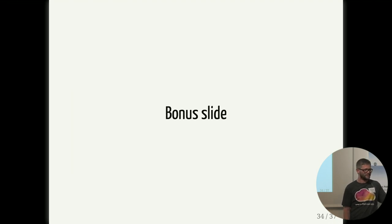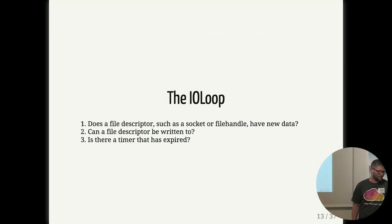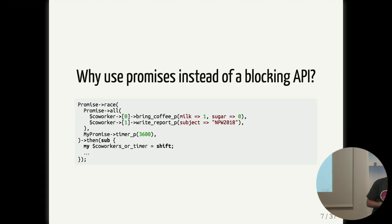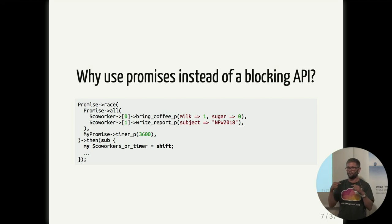Okay, now on to the bonus slides - this is going way too quick. Does anyone have any questions? [Question: Explain race and all - I've never seen promises before.] Okay, let's go back to the co-worker example. When you say Promise->all, you give it a list of promise objects, and internally that method is going to wait for all of them to be fulfilled before calling the callback. So the fulfillment callback won't be called until both of those promises are done running.